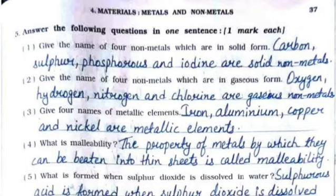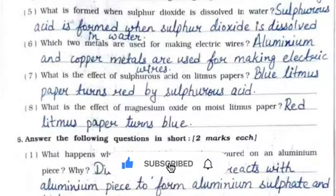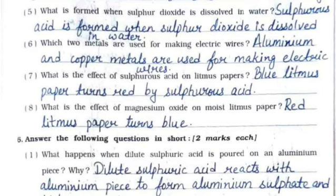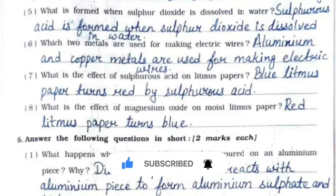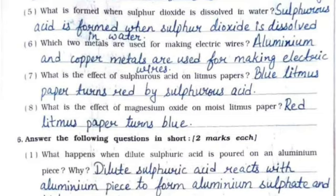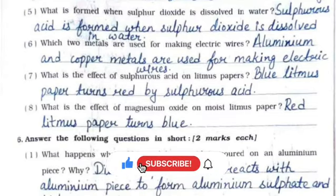Fourth: what is malleability? The property of metals by which they can be beaten into thin sheets is called malleability. Fifth: what is formed when sulfur dioxide is dissolved in water? Sulfurous acid is formed. Sixth: which two metals are used for making electric wires? Aluminum and copper. Seventh: what is the effect of sulfurous acid on litmus paper? The blue litmus paper turns red.